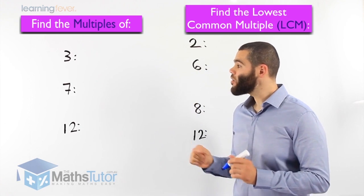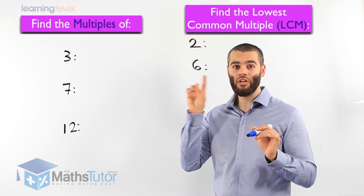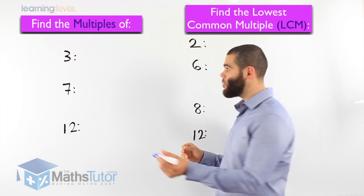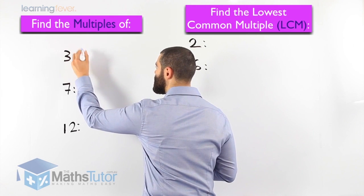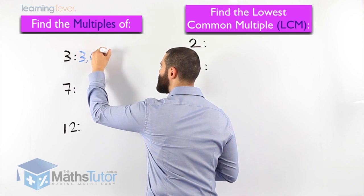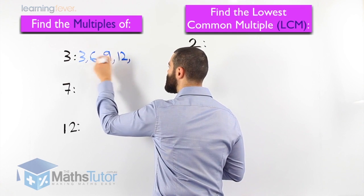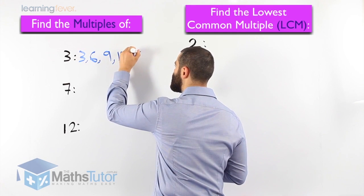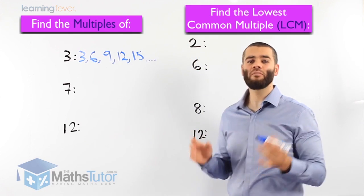So we want to know what are the multiples of 3. Straight away multiples, I straight away know multiples mean times tables. What are the multiples of 3? 3 times 1 is 3, 3 times 2 is 6, 3 times 3 is 9, 3 times 4 is 12, 3 times 5 is 15, and so on. As you can see, these are the multiples of 3, the times tables of 3.